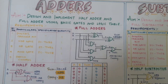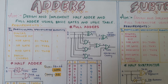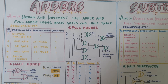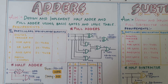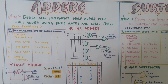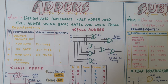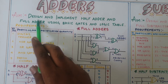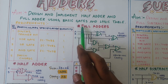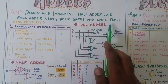So what do we mean by adders? An adder is any electronic circuit which is able to add two numbers — we call it an adder circuit. This is the aim of the experiment: design and implement half adder and full adder using basic gates and logic tables.